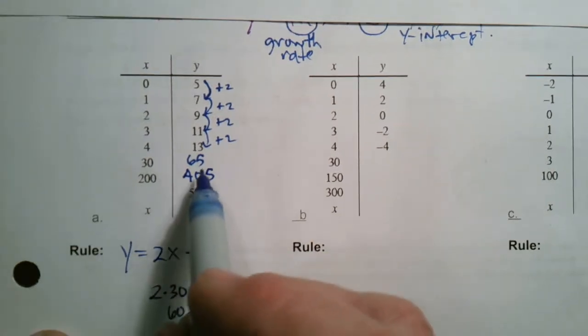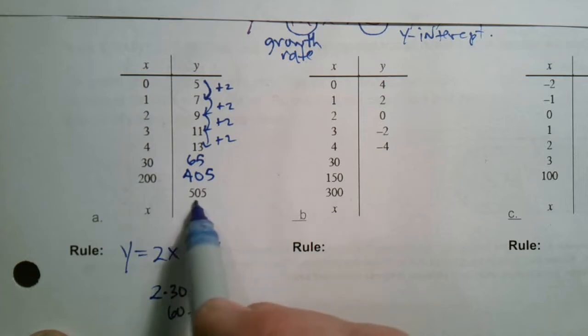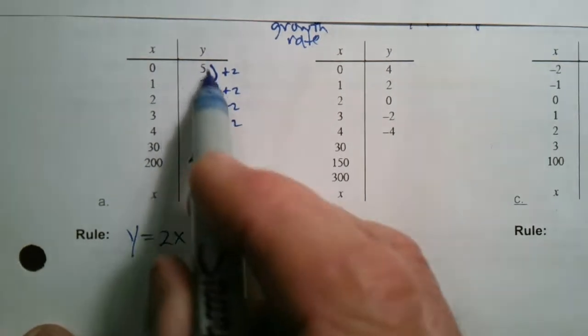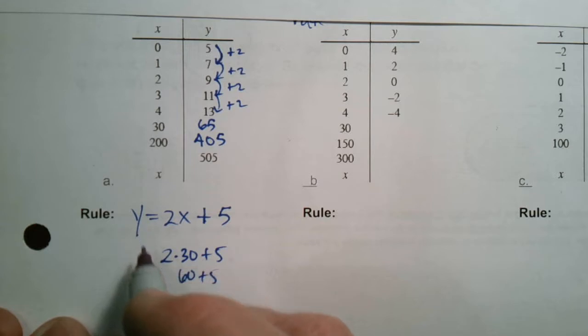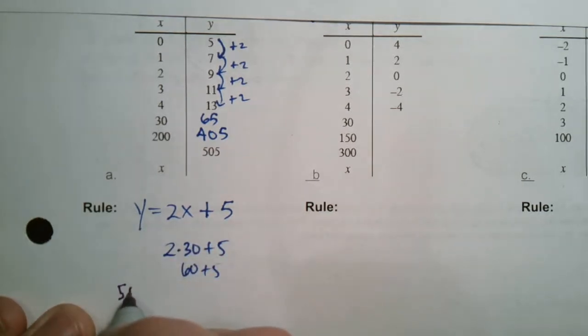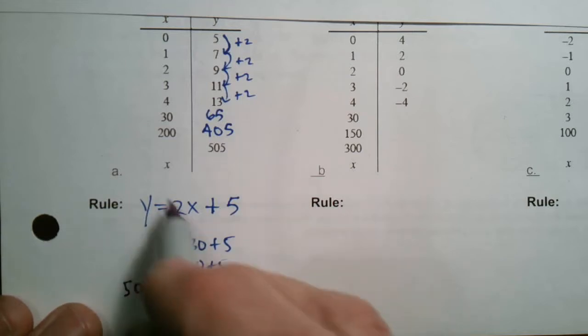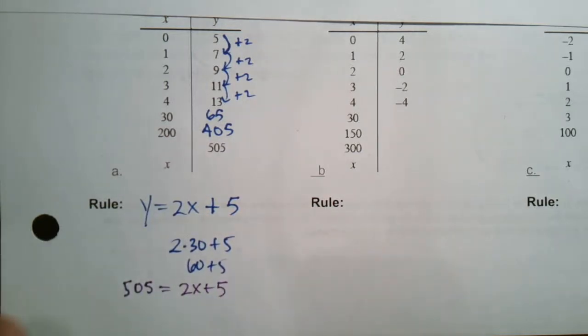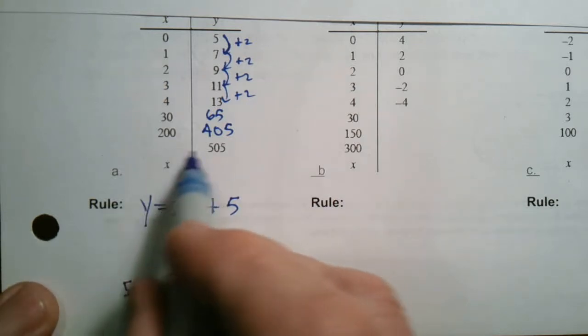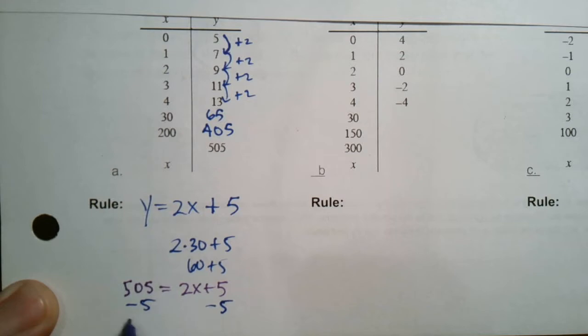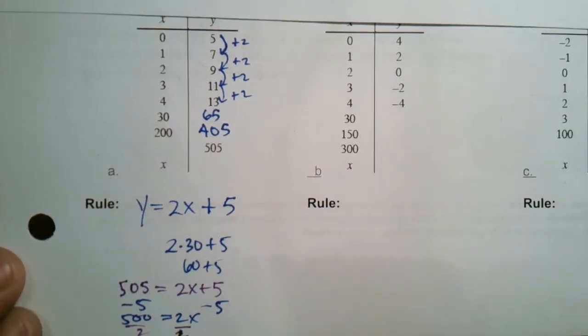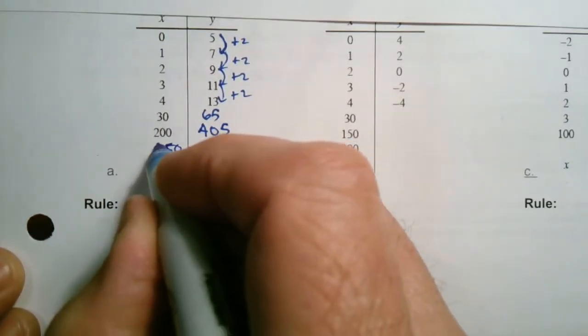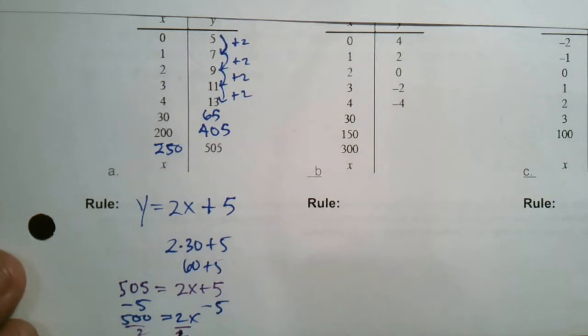So now I'm asking, what times 2 plus 5 is 505? So I'm given the y, so I've got to work backwards. So what does that mean? So given the y, I'm going to do the equation where I'm going to plug in my y. So my y is 505, and I need to figure out what x is. So 505 is equal to 2x plus 5. So I have to solve for x to figure out what that corresponding x would be.